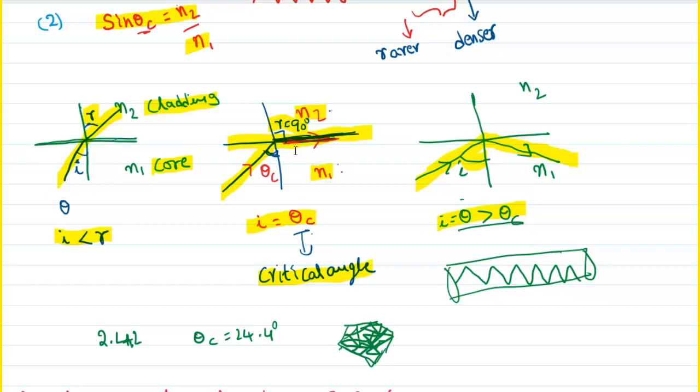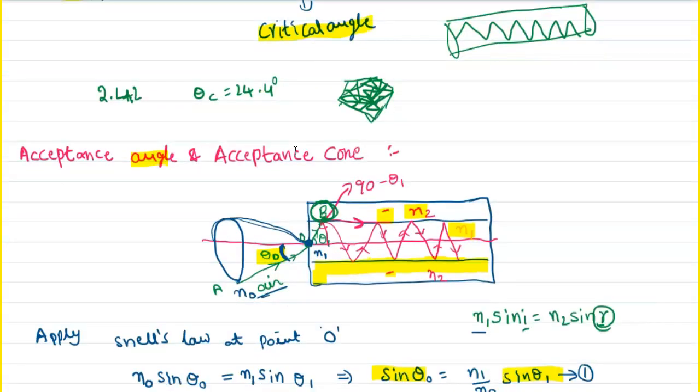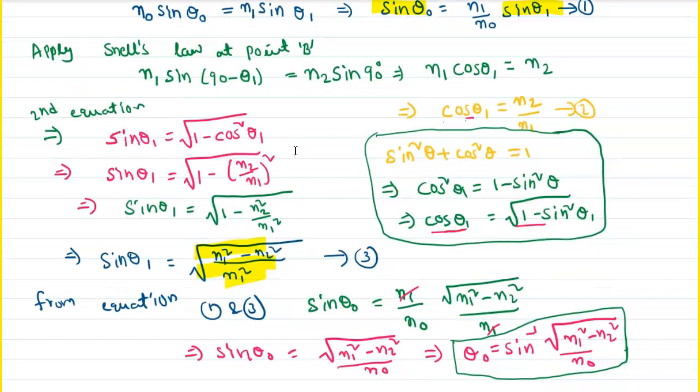From the previous class, we covered the acceptance angle and acceptance cone. The acceptance angle is the angle at which light enters the optical fiber and successfully undergoes total internal reflection. The cone formed around the fiber axis is called the acceptance cone. The acceptance angle is expressed in terms of refractive index.